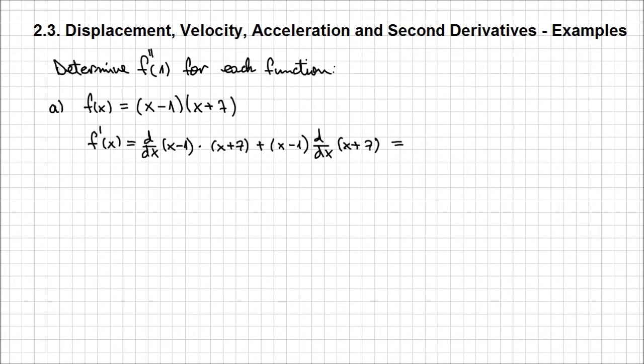Now, the derivative of this first expression is 1, so all is left is x plus 7. The same derivative of x plus 7, it's 1, so it's going to be plus x minus 1. And if we add the like terms, it's going to be 2x plus 6, or 2 times x plus 3 if you want to factor it out.